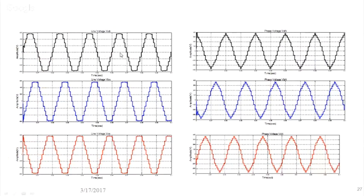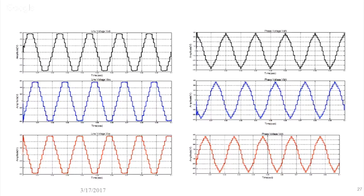The output voltage from solar-powered simulation shows some disturbance and fluctuation, unlike the clean output from battery power. This is because solar power has inherent variability even with MPPT. The five-level inverter waveform also shows some fluctuation due to the solar source. The THD from simulation is more than 10% when using solar panels, as opposed to ~9% with ideal battery sources.